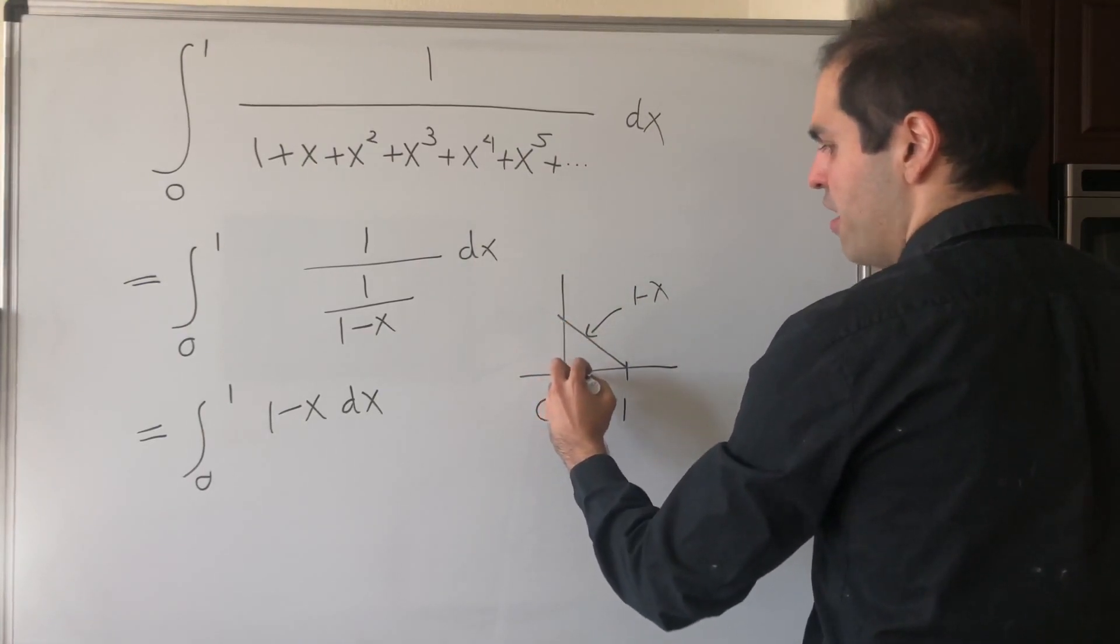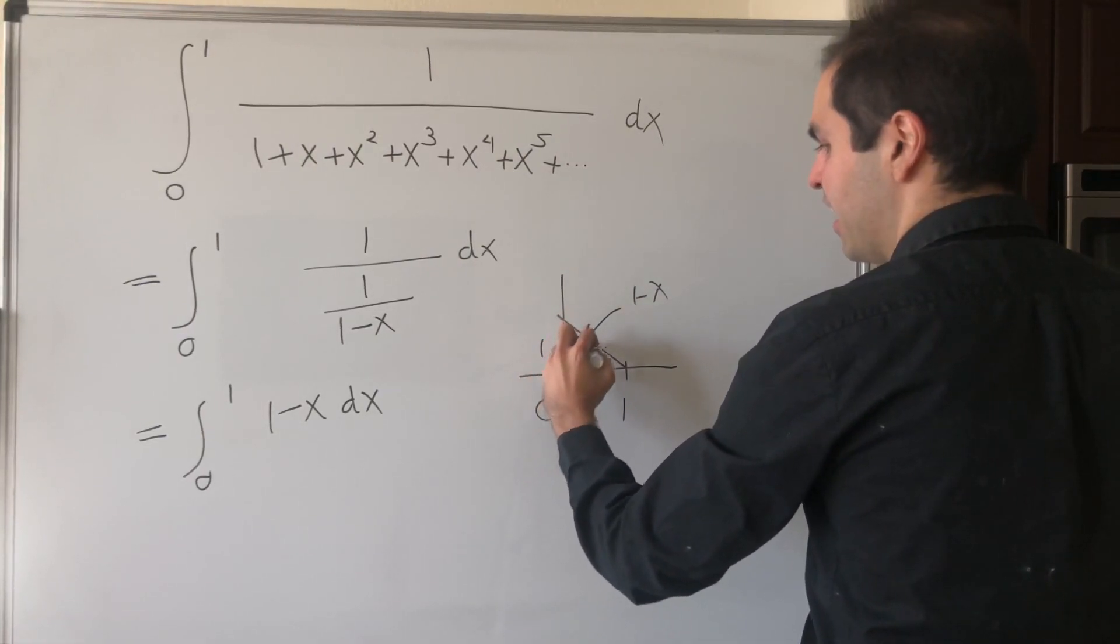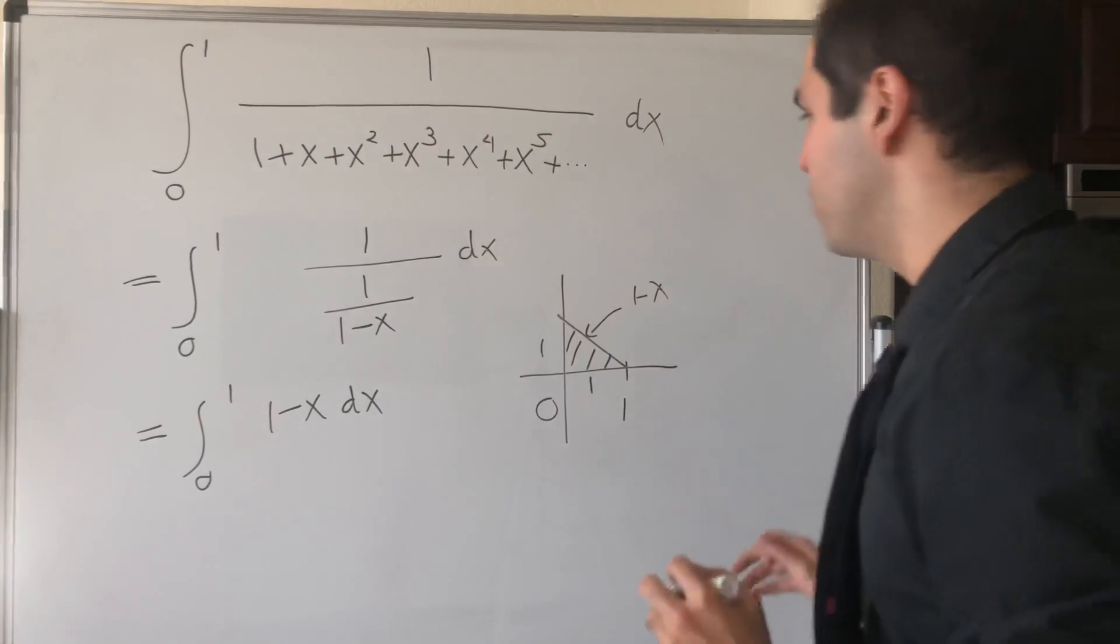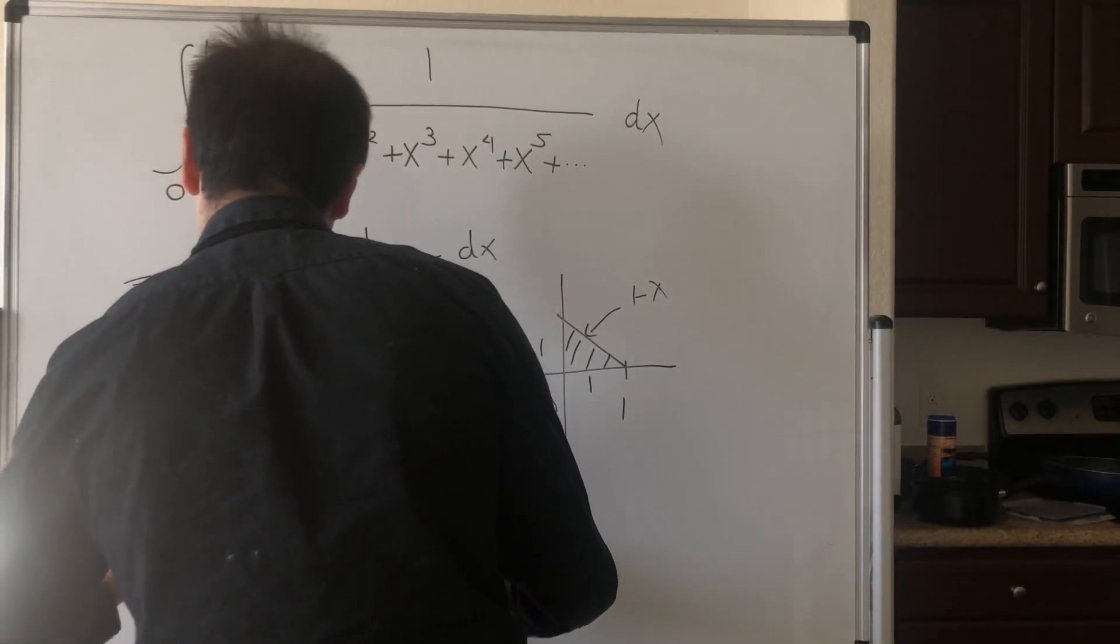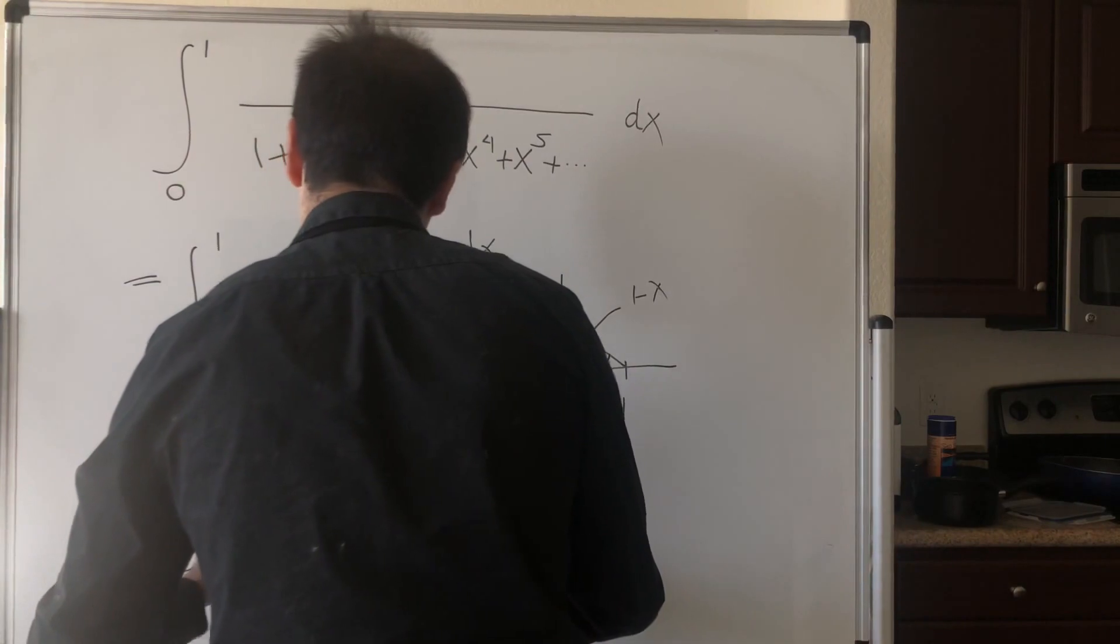So in other words, the area of the triangle with base 1 and height 1, and that just becomes 1 half times 1 times 1. And that's 1 half.